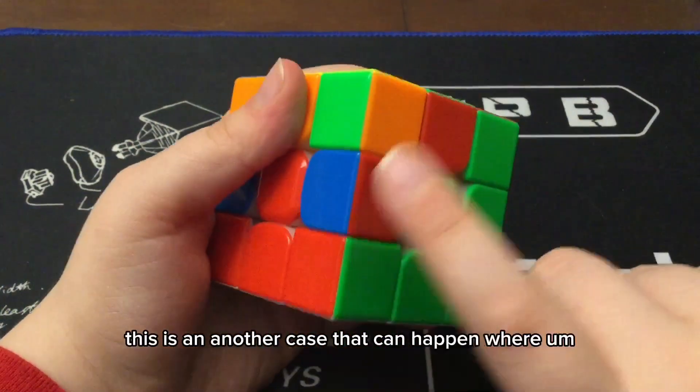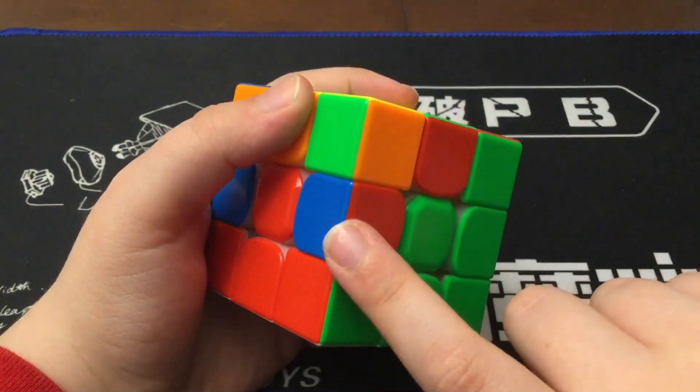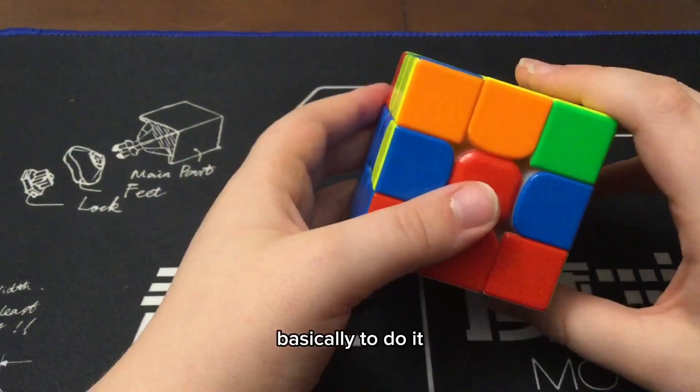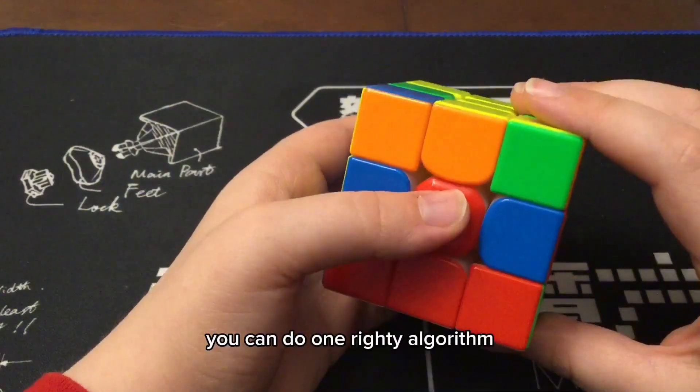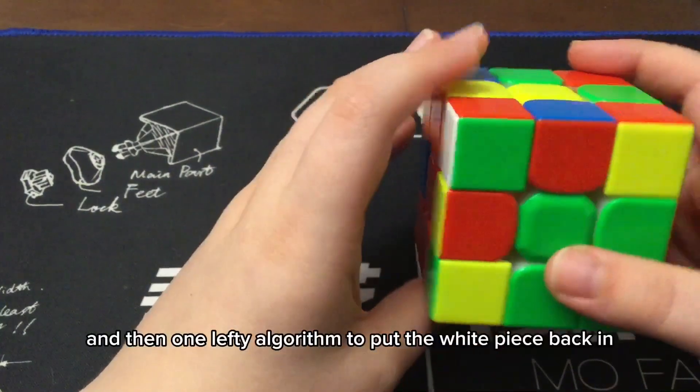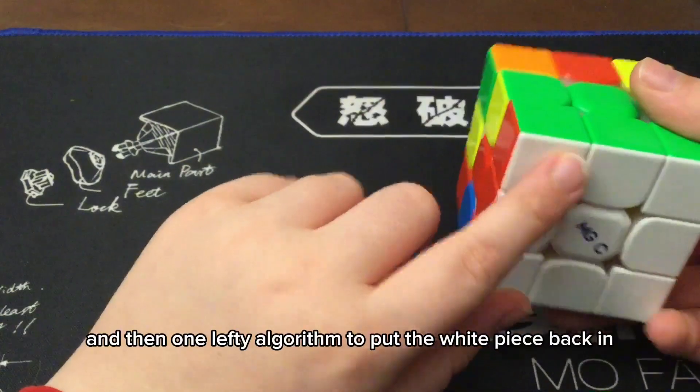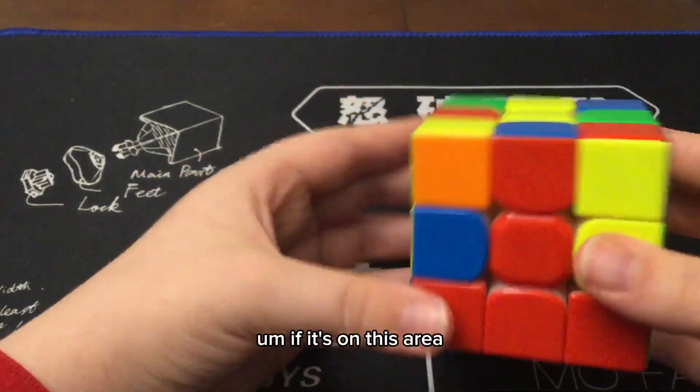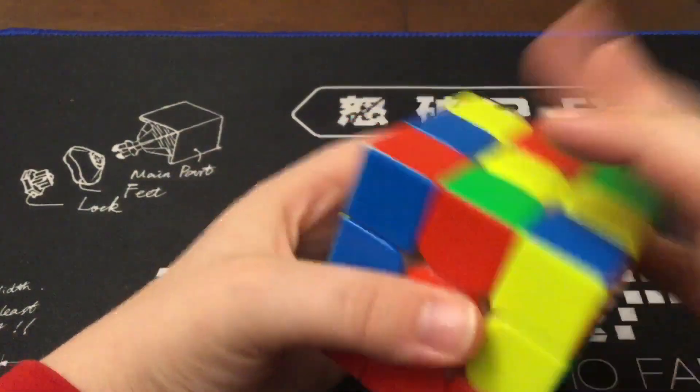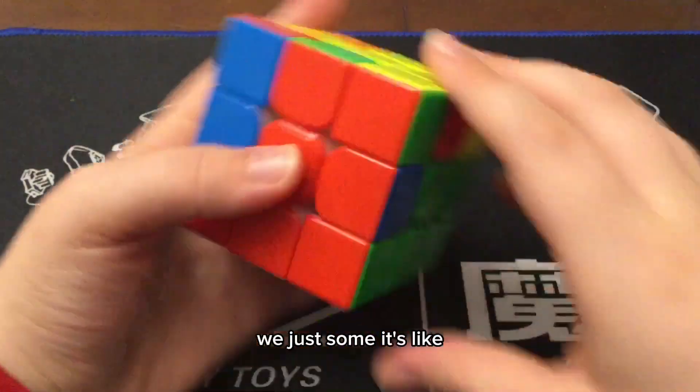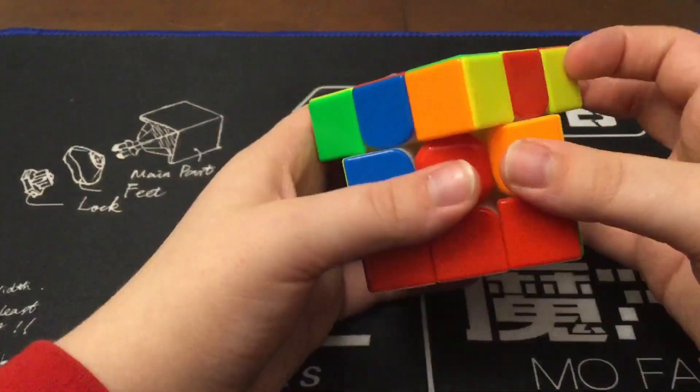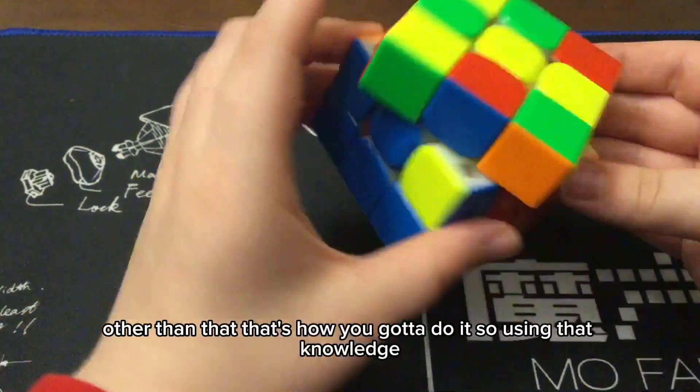This is another case that can happen, where it's stuck in there. Basically, to do it, you can do one righty algorithm to bring it out, and then one lefty algorithm to put the white piece back in. If it's on this area, it's reverse, I think you understand by now, it's lefty righty. Other than that, that's how you gotta do it.